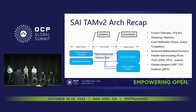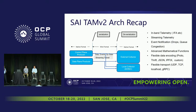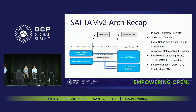Broadcom is innovating specifically in the area of telemetry from silicon to silicon, and this is our one key focus area. In addition to innovating in our silicon, we are also contributing the specification and features to the SAI community through the telemetry and monitoring specification. This TAM specification covers several telemetry features like streaming telemetry, mirror on drop, flow tracker, and in-band telemetry is one key mechanism in it.